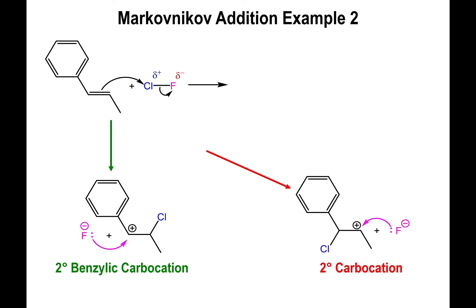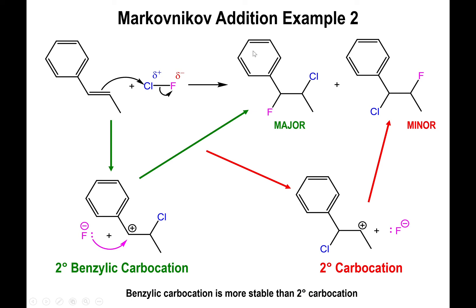So even though they're both secondary, and they both can be produced because they are likely species as carbocations, we're expecting that we're going to produce the two different products, the one where the chlorine is closest to the benzene ring, the one where the chlorine is farthest from the benzene ring. But the one that has the chlorine farthest from the benzene ring arises from the secondary benzylic carbocation. So we would expect that this particular product will be the major product of the reaction. Whereas the one that has the chlorine closest to the benzene ring, which arises from the secondary carbocation, the regular secondary carbocation, will be the minor product.